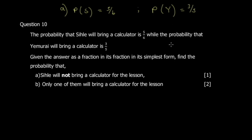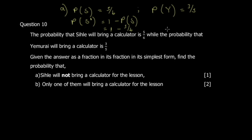Using complement notation: P(Cifler not bringing calculator) = 1 − P(Cifler brings calculator) = 1 − 5/6 = 1/6. So the probability that Cifler will not bring a calculator is 1/6.